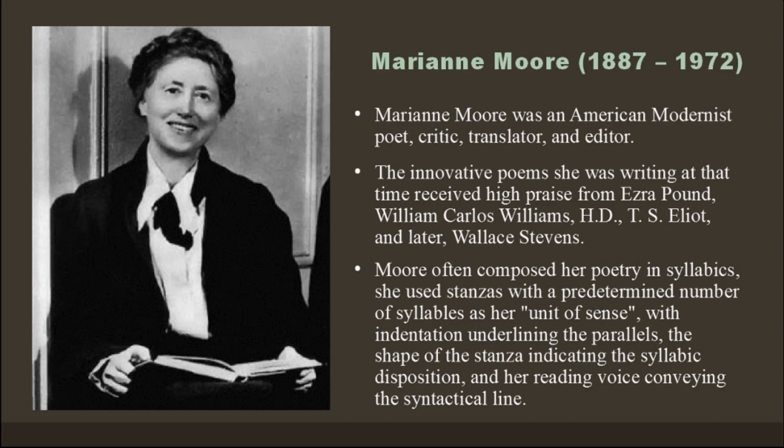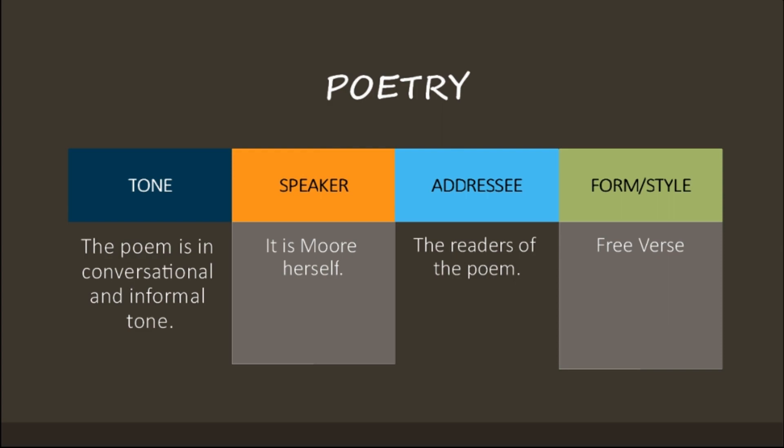Moore has her own personal style, and that is syllabics. The tone of the poem is very conversational and informal. For example, the very first line of the poem, 'I too dislike it,' tells us that she is talking with somebody and she's agreeing to their viewpoint.